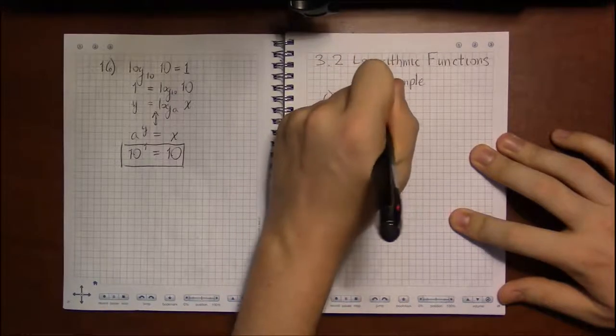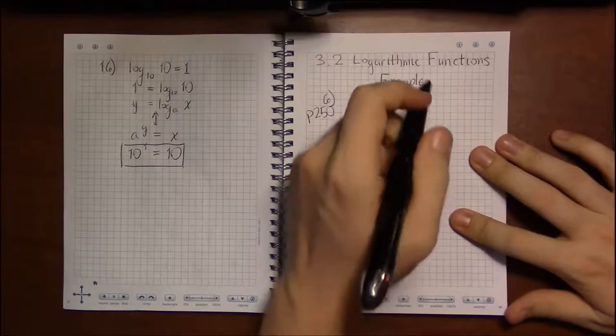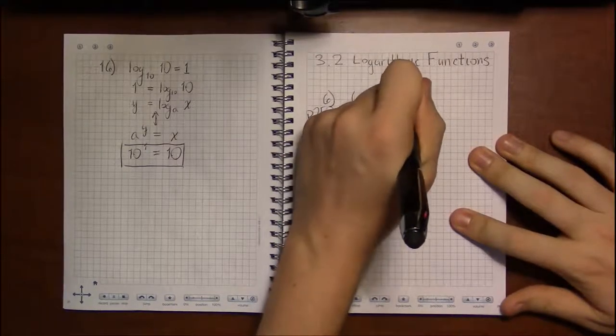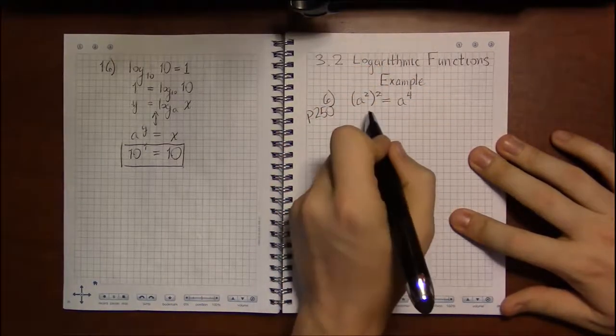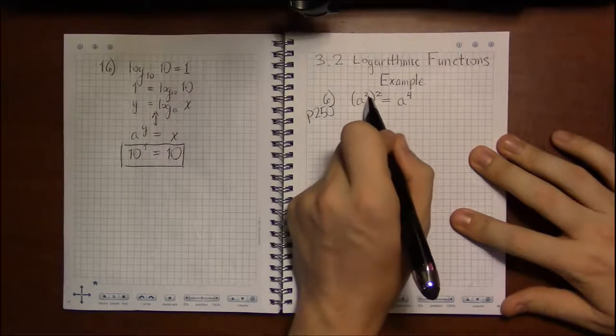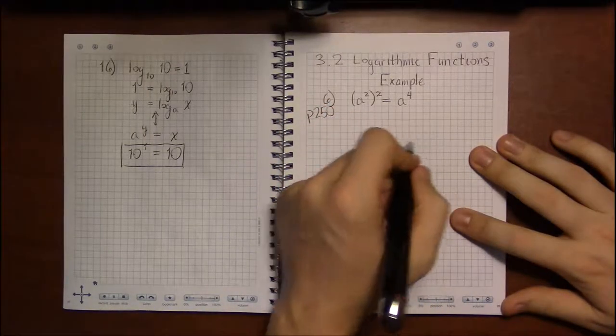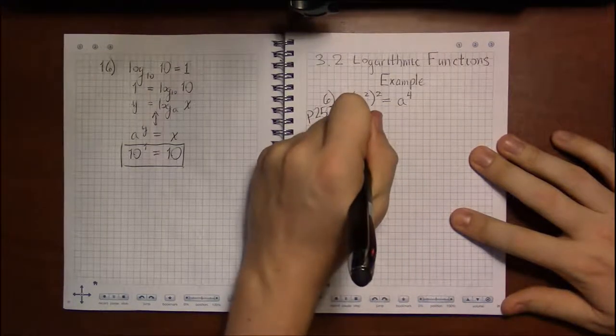On problem 6, we're looking at a squared squared equals a to the fourth, just a simple property of exponents that the twos will multiply together to give you 4. We need to convert this into a logarithmic form.